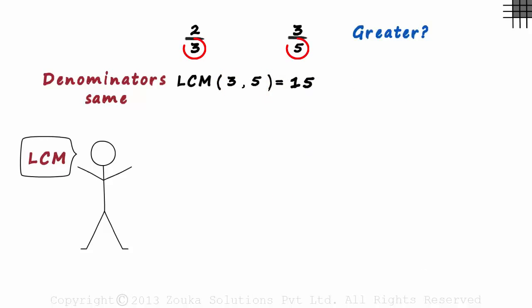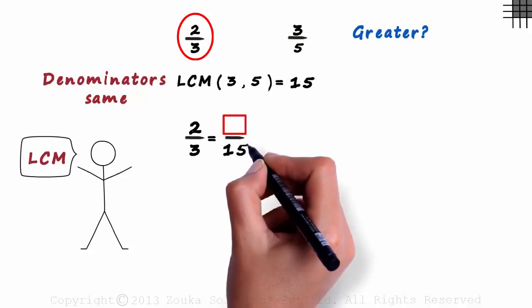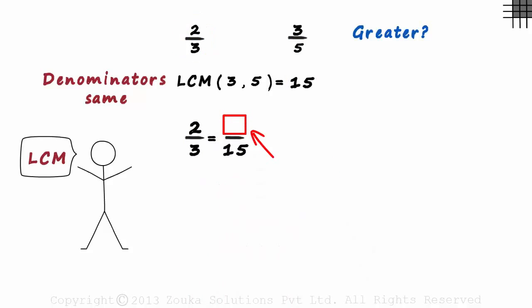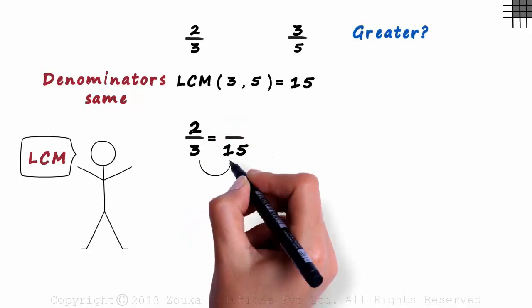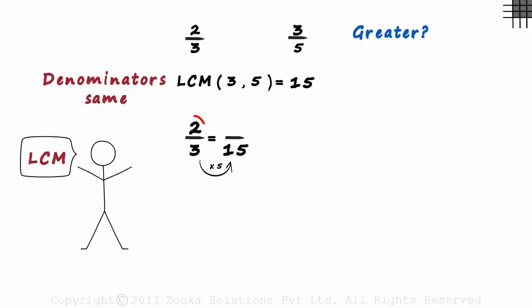We have to make the denominator of each of these fractions equal to 15. Look at the first fraction. We write 2 by 3 as something over 15. We just have to find this something. To get 15 in the denominator, we multiply the denominator by 5. And to keep the ratio unchanged, we also multiply the numerator by 5. 2 times 5 gives us 10. The ratio is hence written as 10 by 15.